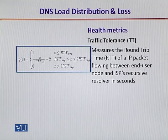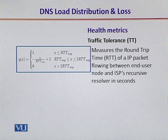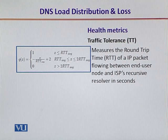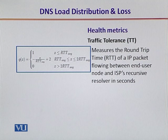The next health metric is traffic tolerance, given in terms of the round trip time for an IP packet flowing between the user and the ISP recursive resolver, represented in seconds. The quality factor for traffic tolerance is very high — close to 100% — when the round trip time is much less than the average measured round trip time, and becomes zero when the round trip time for a DNS resolution request exceeds twice the allowable round trip time average.